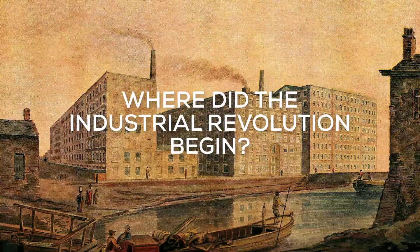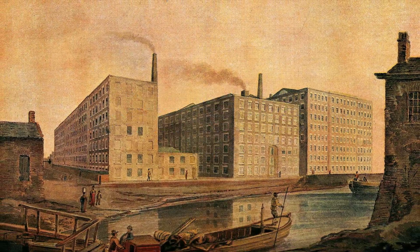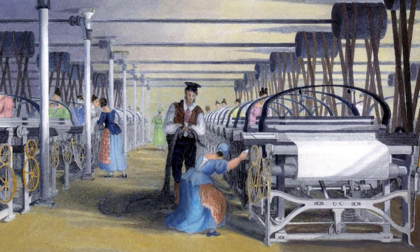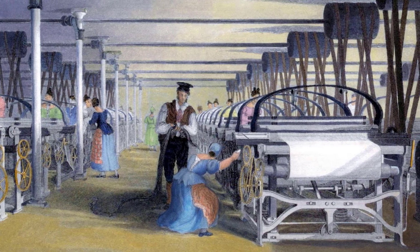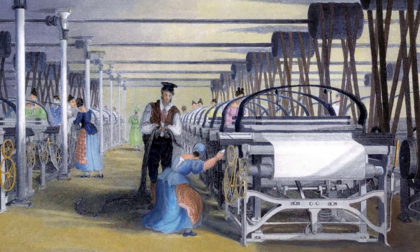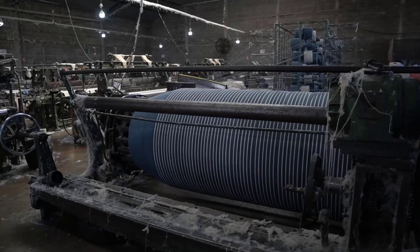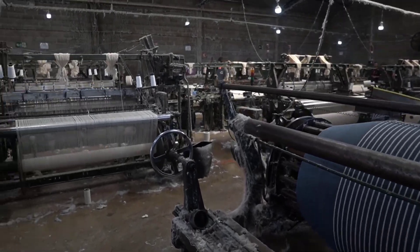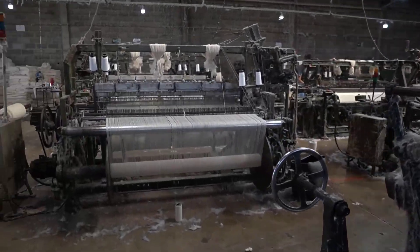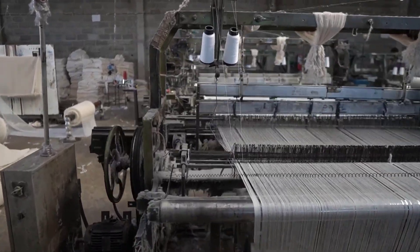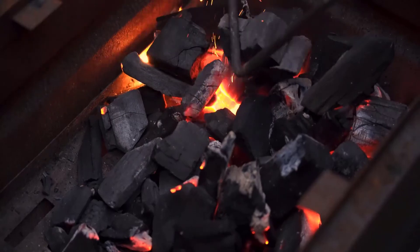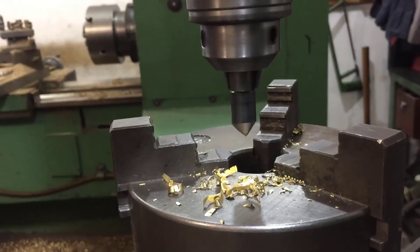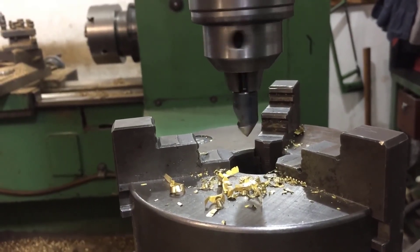The Industrial Revolution began in Great Britain in the late 1700s. Many of the first innovations that enabled the Industrial Revolution began in the textile industry. Making cloth moved from homes to large factories. Britain also had plenty of coal and iron, which was important to power and make machines for the factories.